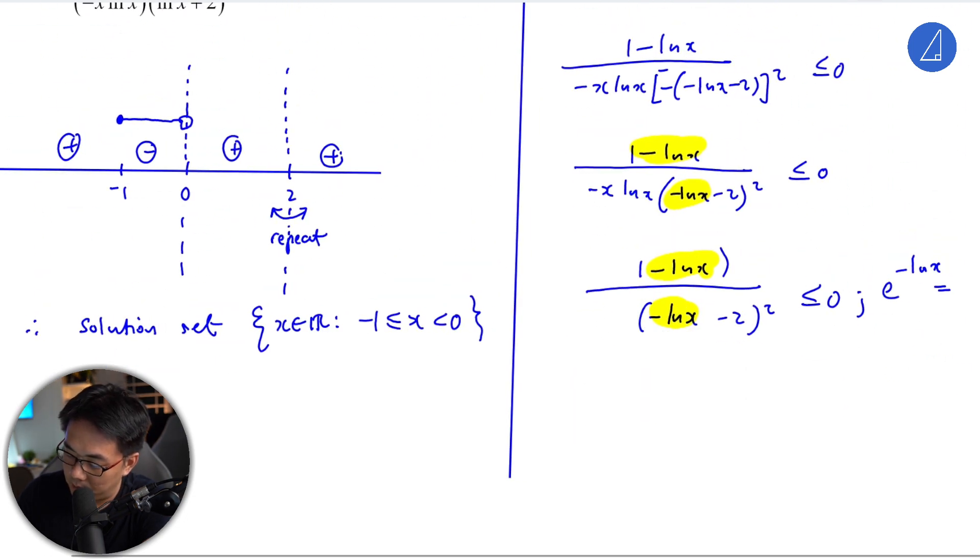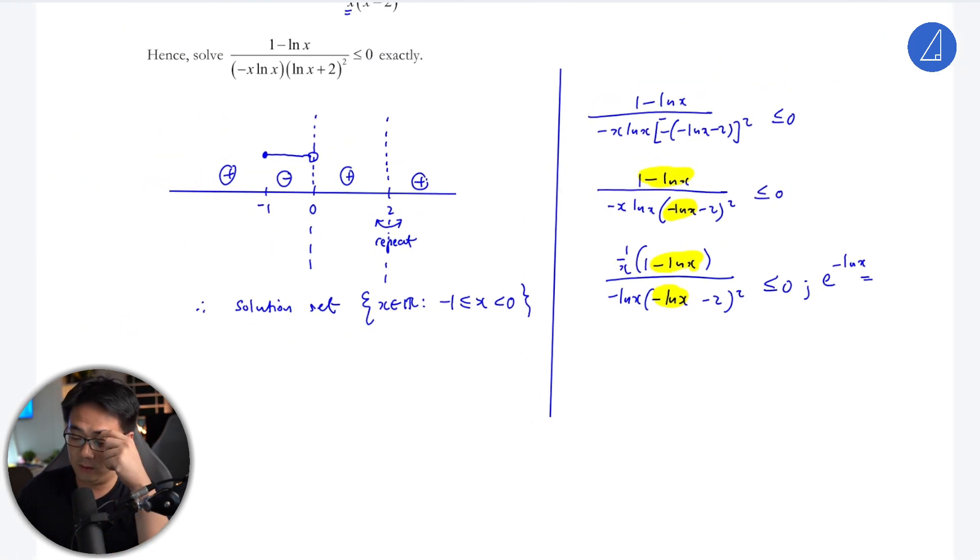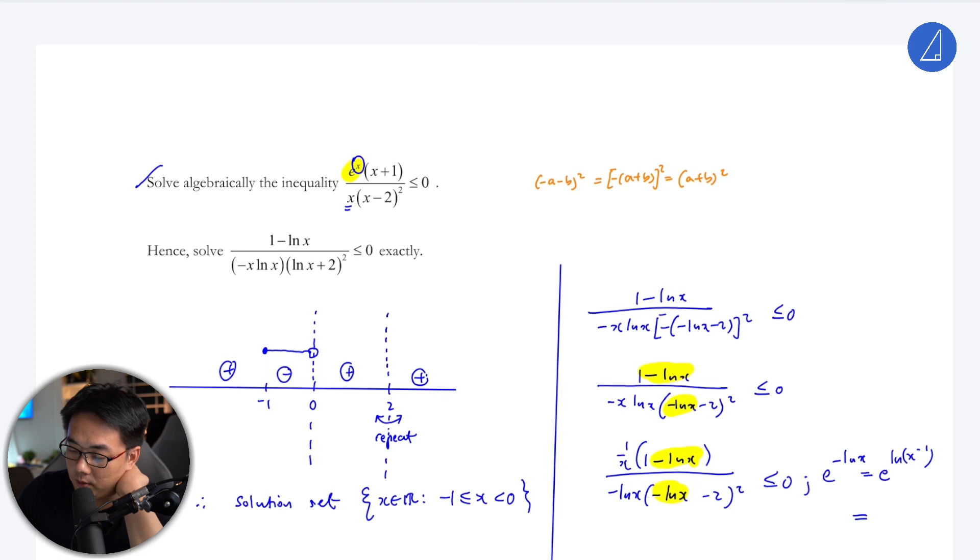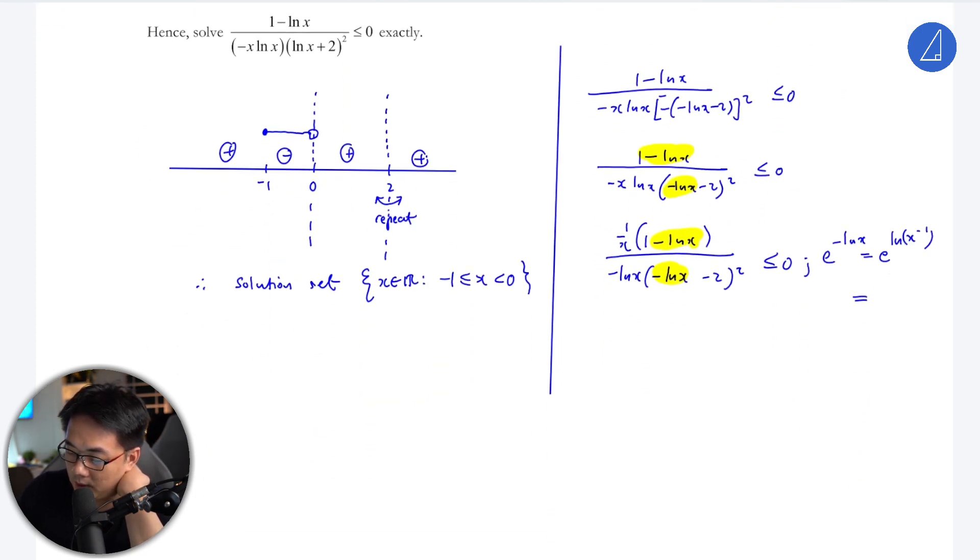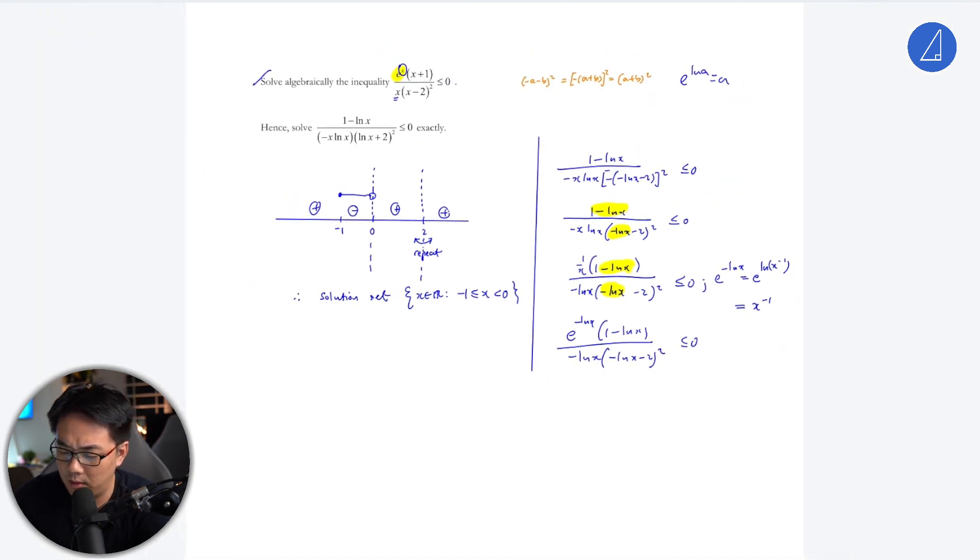If I replace x with −ln x, the 1/x becomes 1/(−ln x). And e^(ln x − 1) - since e^(ln a) equals a - this will just be x − 1. So this can be written as e^(−ln x) or 1/x. Hence, replace x with −ln x and it works.